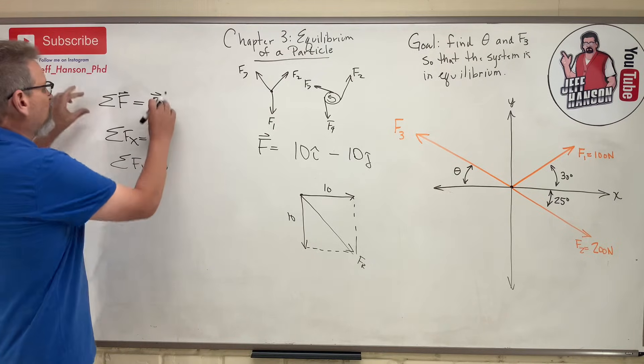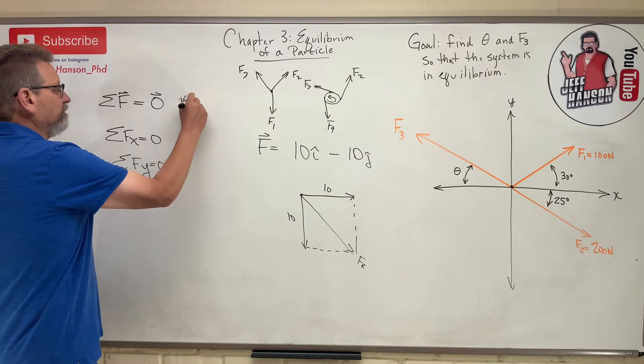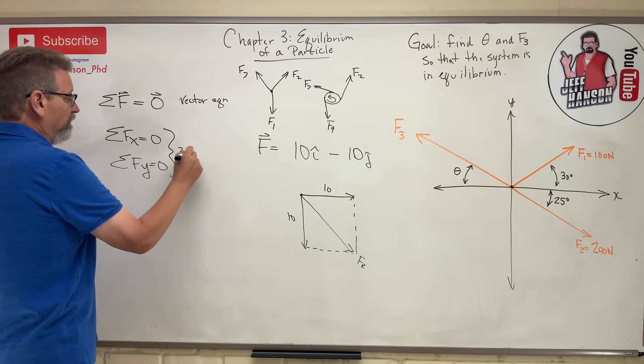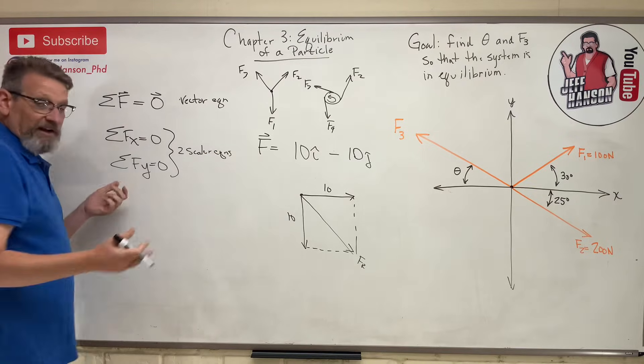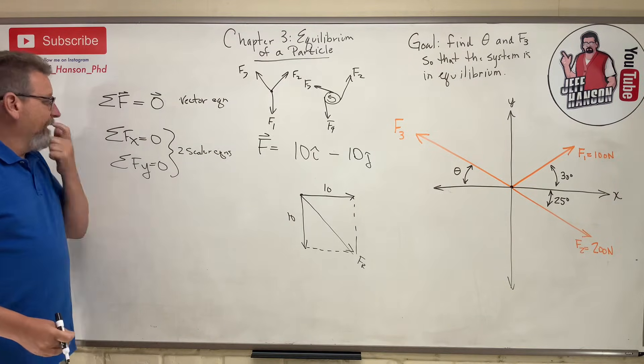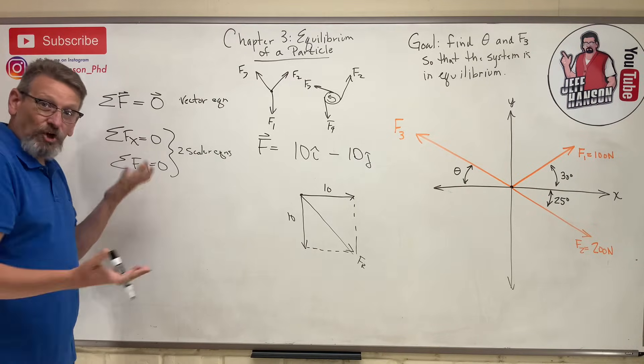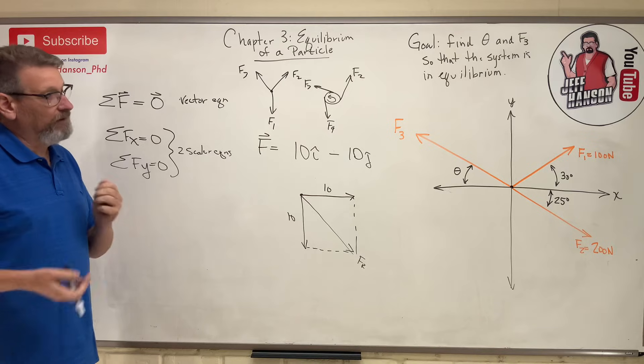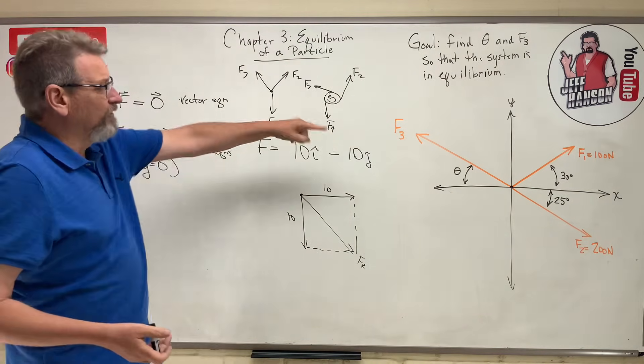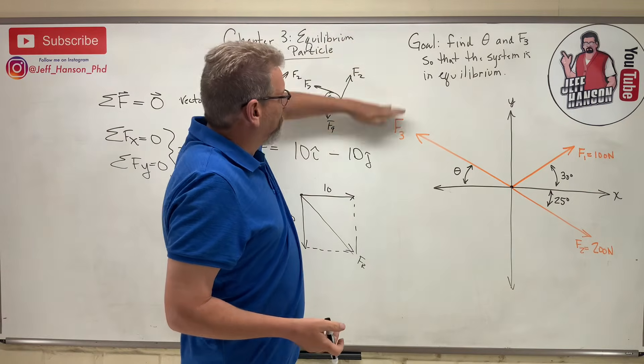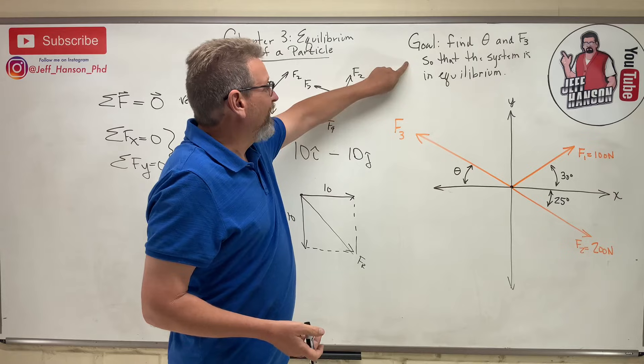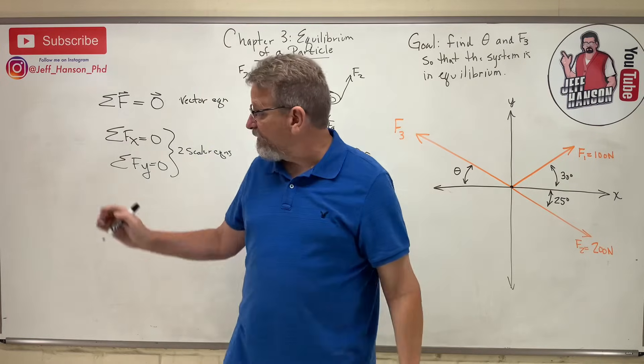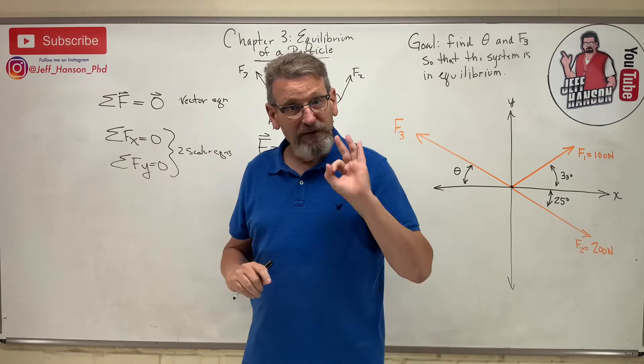So what we're basically doing here is we're taking one vector equation and turning it into two scalar equations. And in 3D, 3 scalar equations. So what that's going to allow us to do, since we have two equations, is solve for two unknowns. Remember, you have to have an equation for every unknown you're going after. So if I've got six unknowns, I better have six equations. So let's see if we can solve this little problem over here. Find theta and F3. Here's F3, and it's at some unknown angle so that the system is in equilibrium. If the system's in equilibrium, that means it's not moving. If it's not moving, that means that the sum of the force in the x and the y must be equal to zero. Let's see if we can do it.